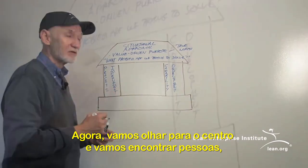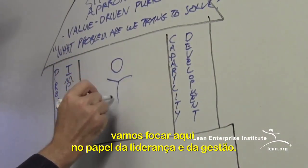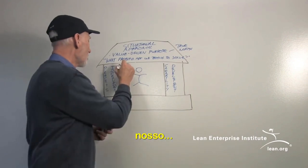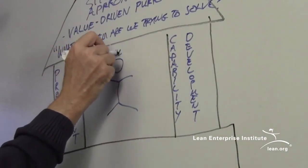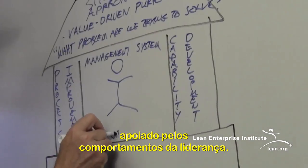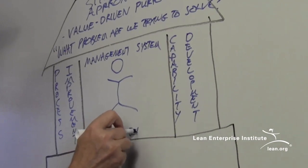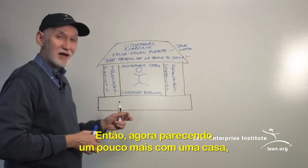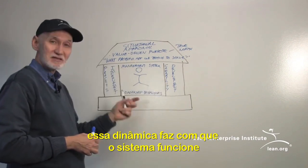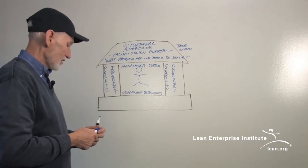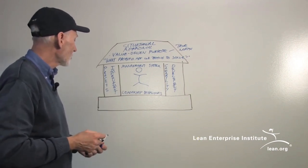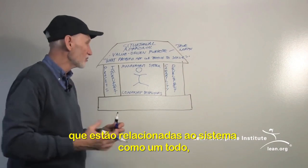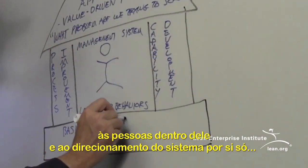In the middle of the house we find people — in particular, the role of leadership and management. Here is where we find our management system, supported and driven by leadership behaviors. There are people inside the house who are the dynamic force making the system work, and also supported by the system. For the foundation, we refer to the basic thinking, the fundamental assumptions and mindset that underlie the entire system, all the people in it, and that drive the transformation itself.